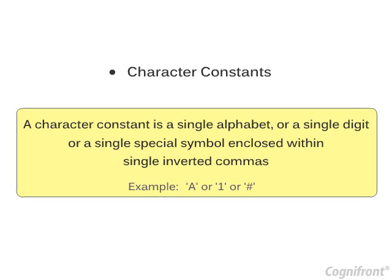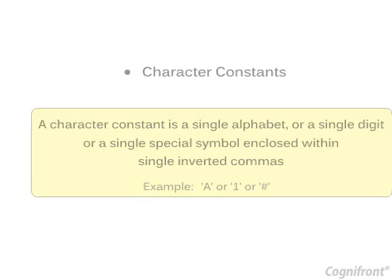A character constant is a single alphabet or a single digit or a single special symbol enclosed within single inverted commas.